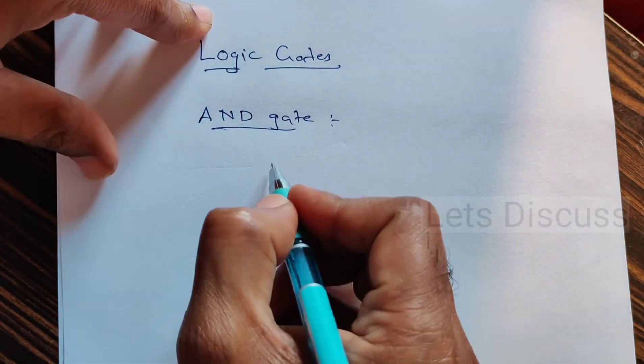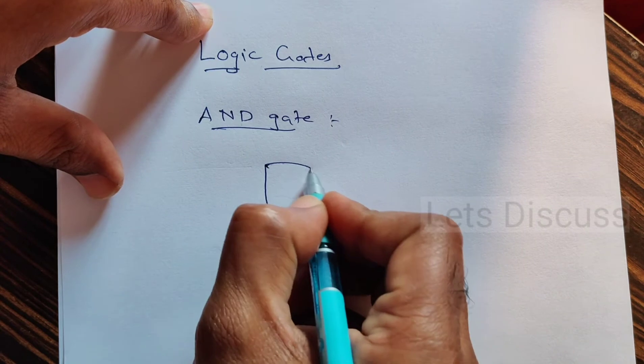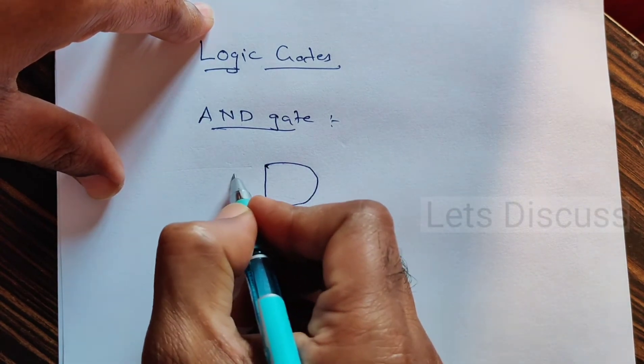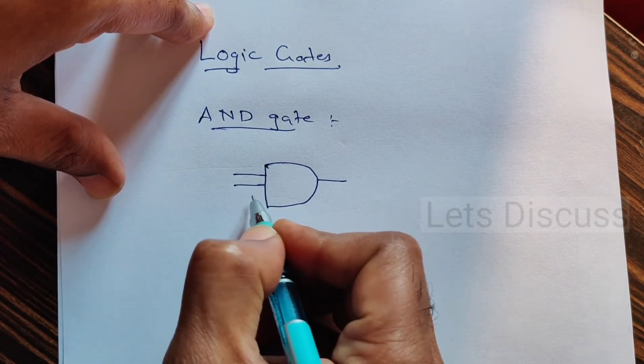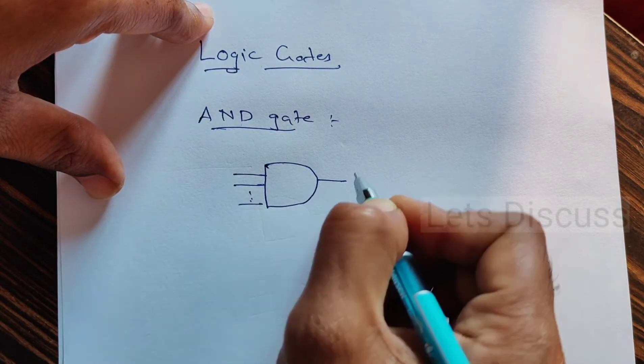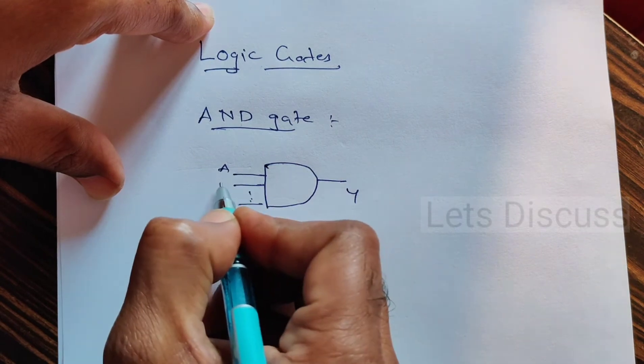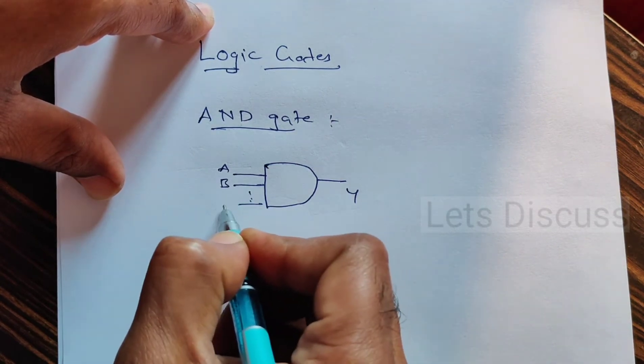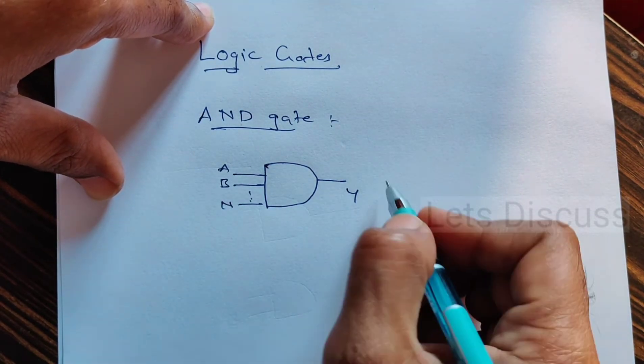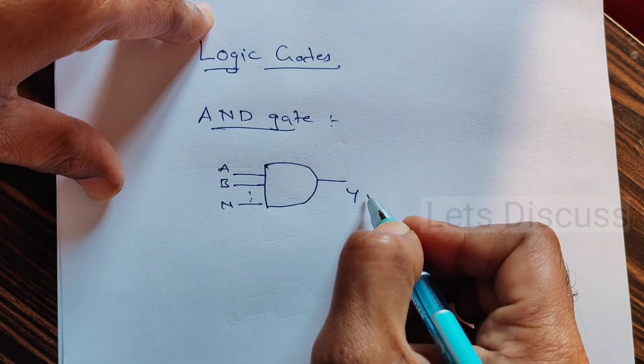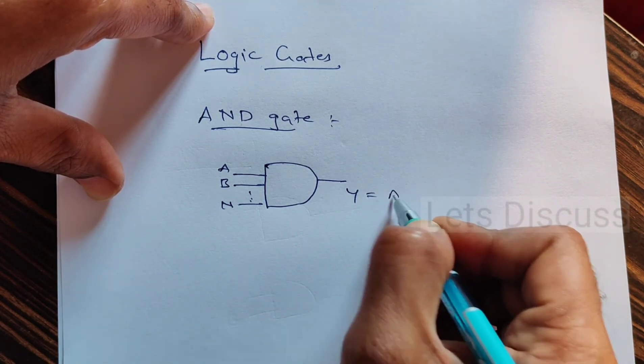The AND gate logic symbol is like this. It could have any number of inputs but only one output. Let's name the inputs A, B, up to N. The output of the AND gate is Y equals A and...